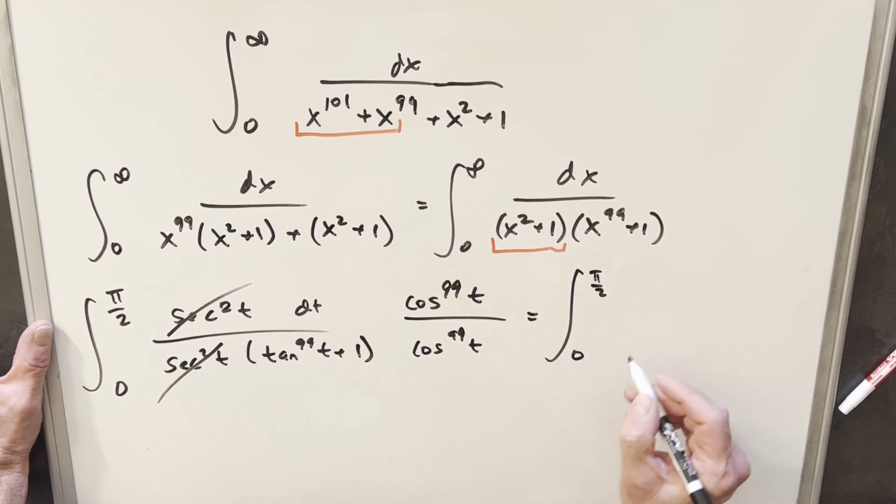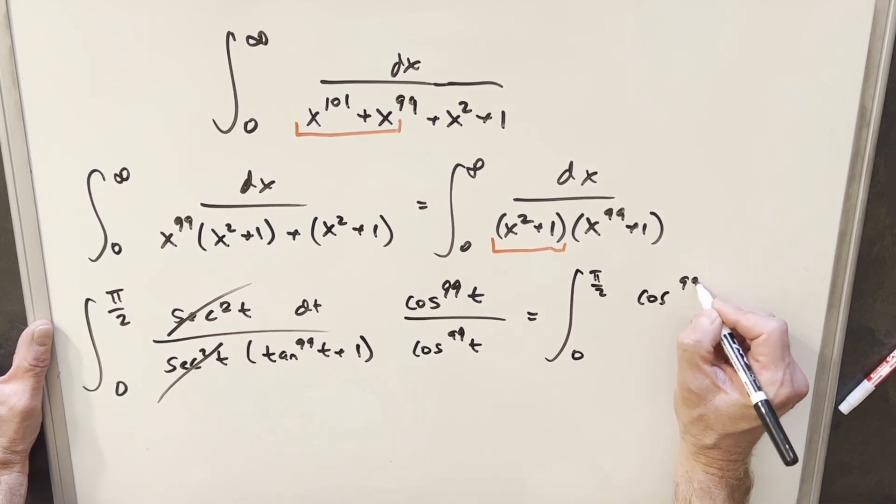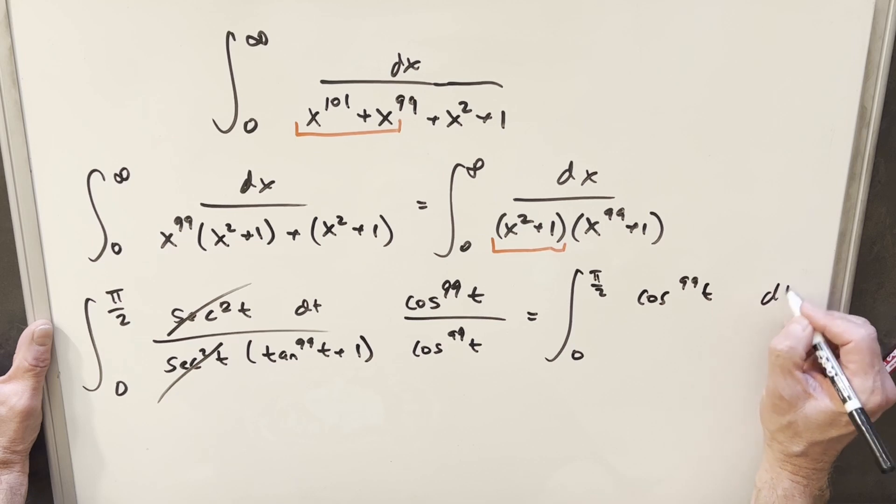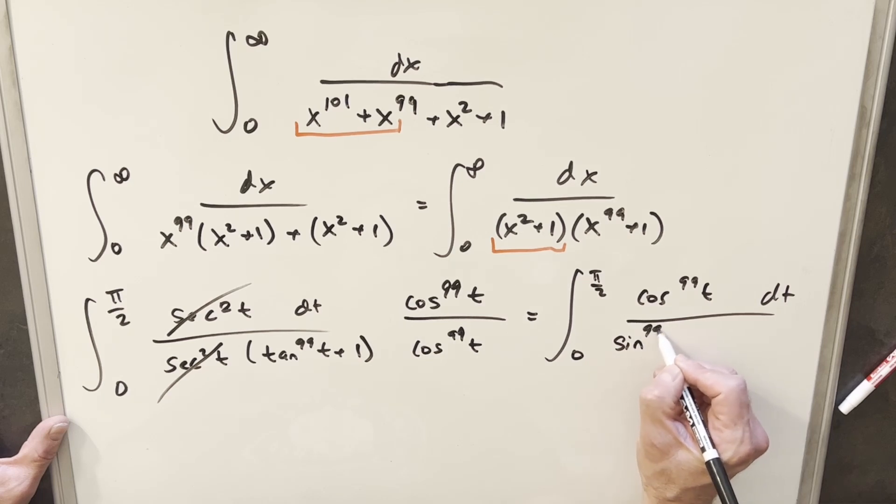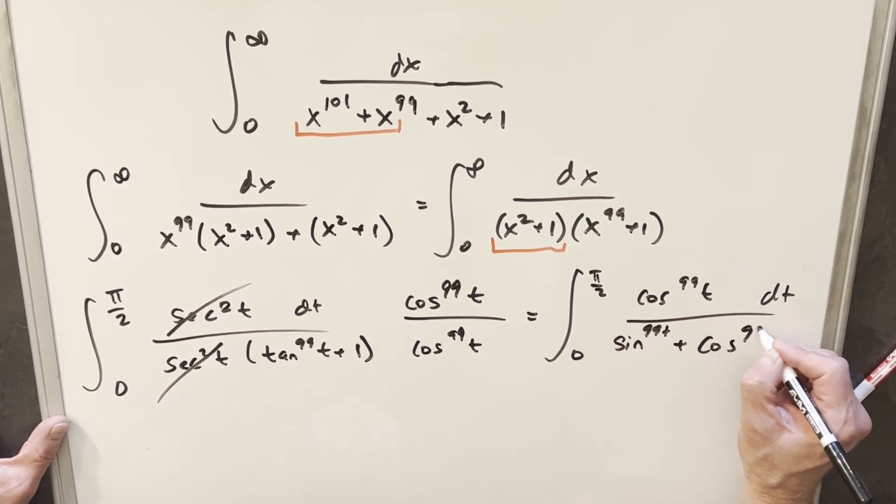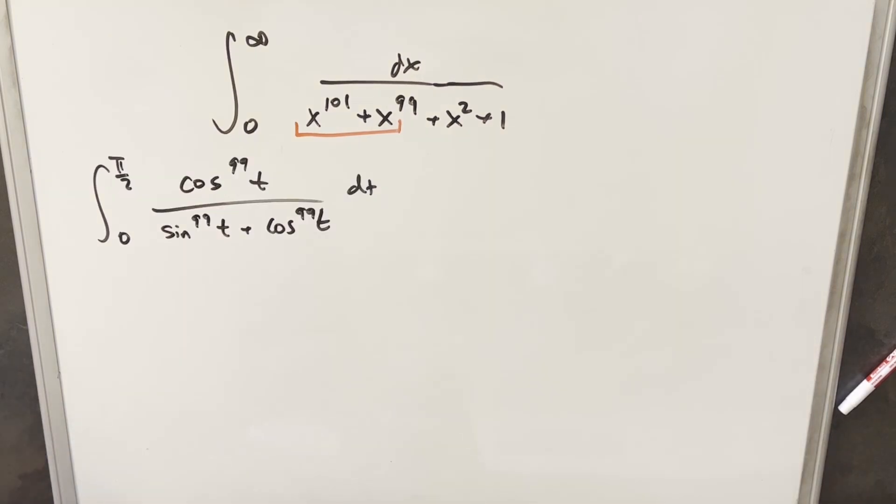And when we do that, we're going to have cosine 99t in the numerator. Then cosine 99t times tan 99t is going to be sine 99t. And then times 1, we're going to have a plus cosine 99t. Then at this point, what we can do is a u substitution.